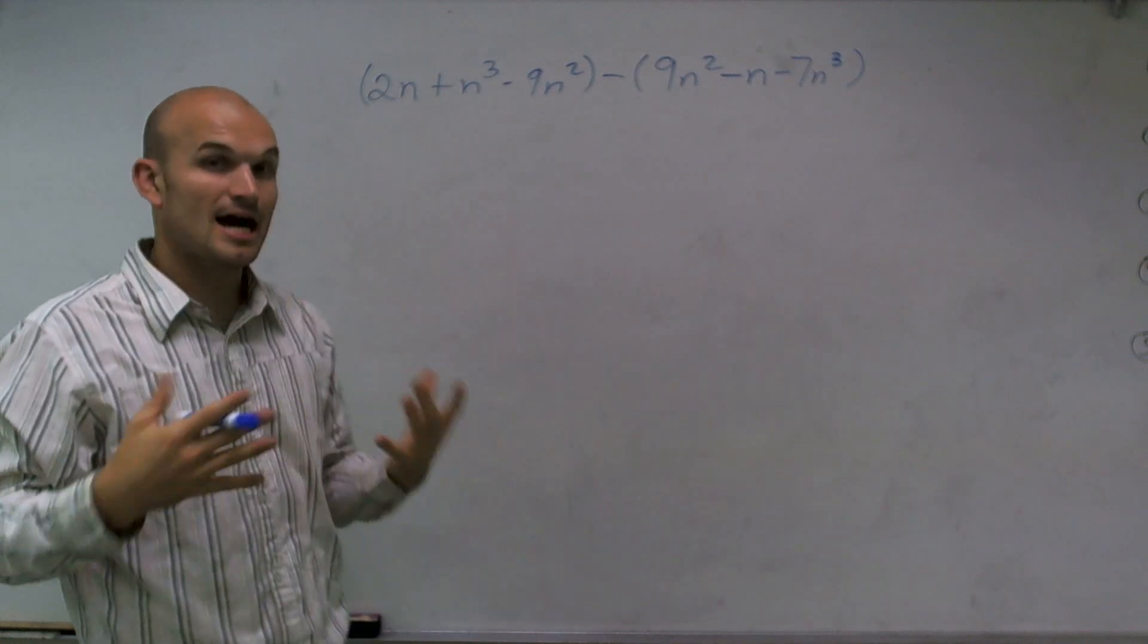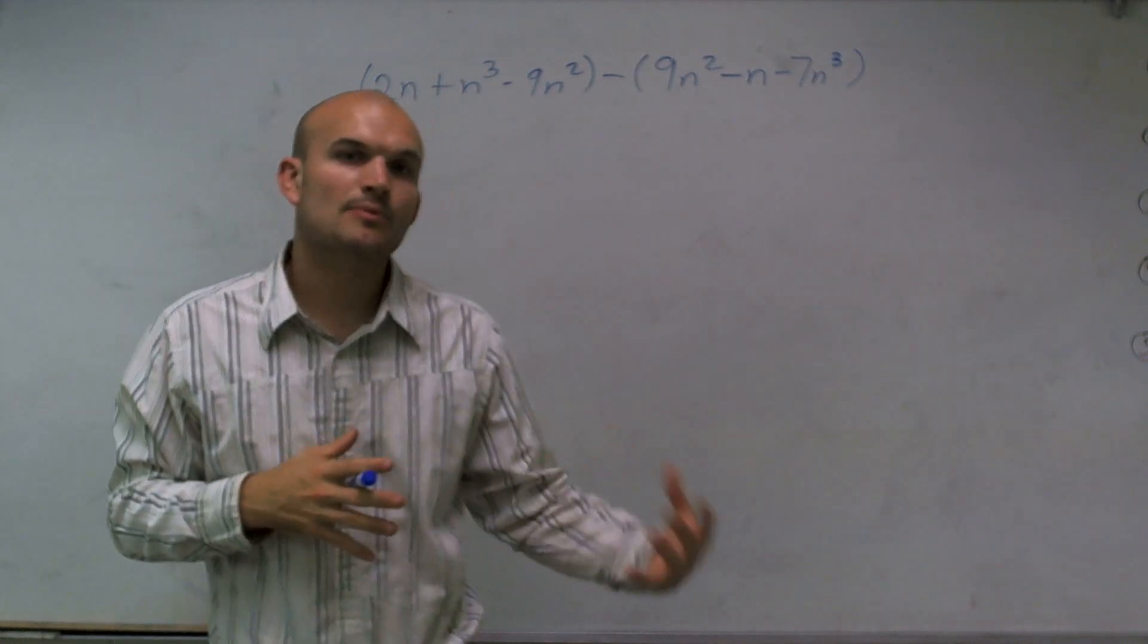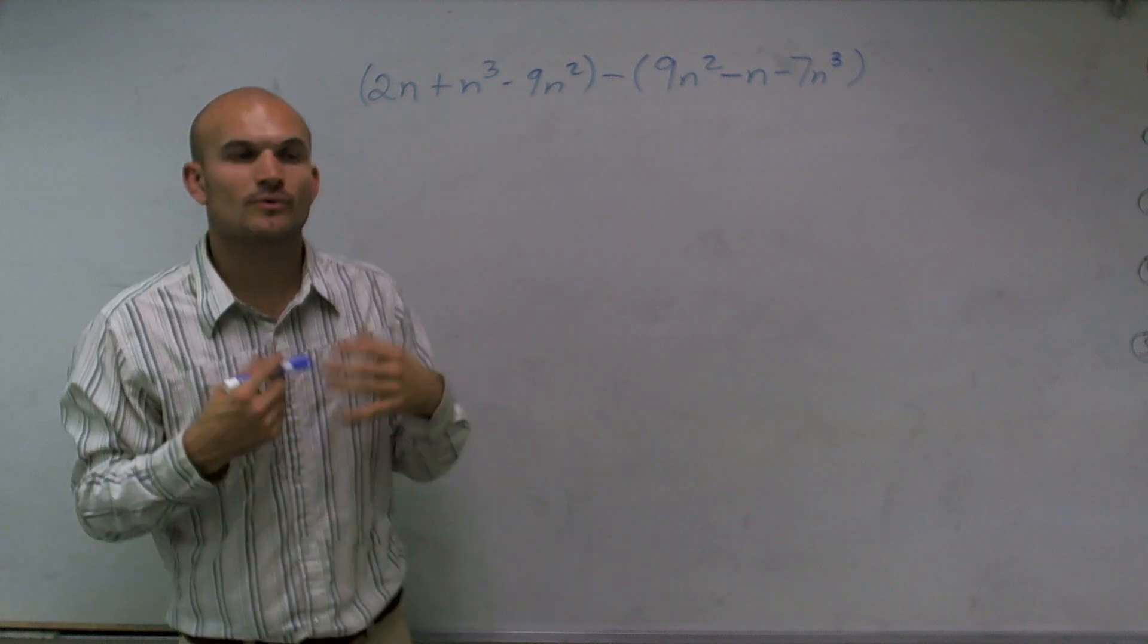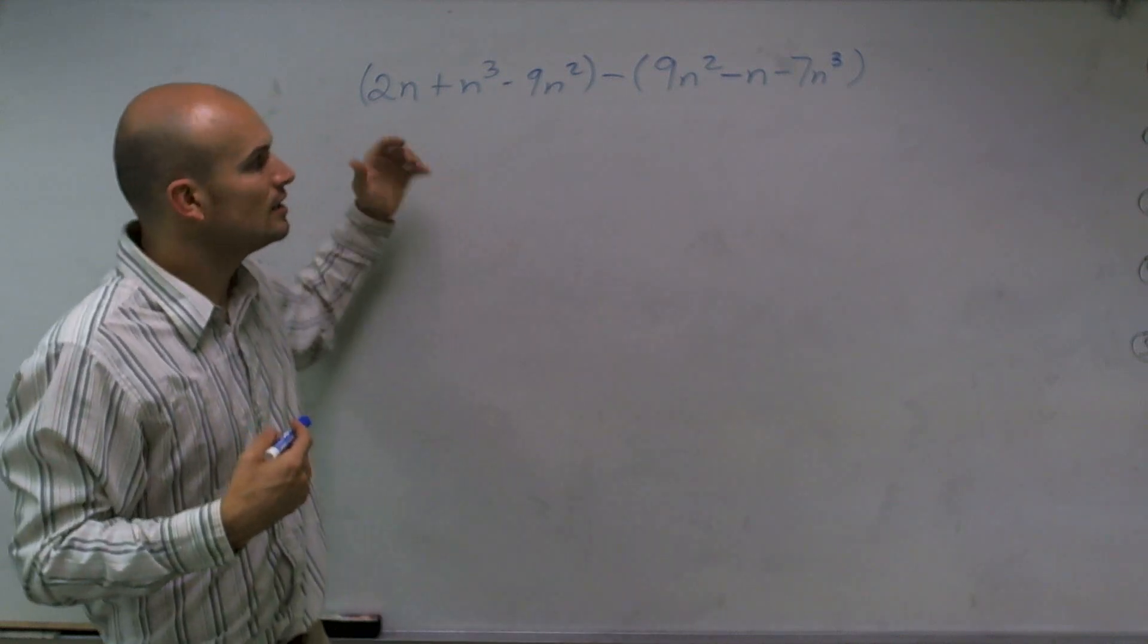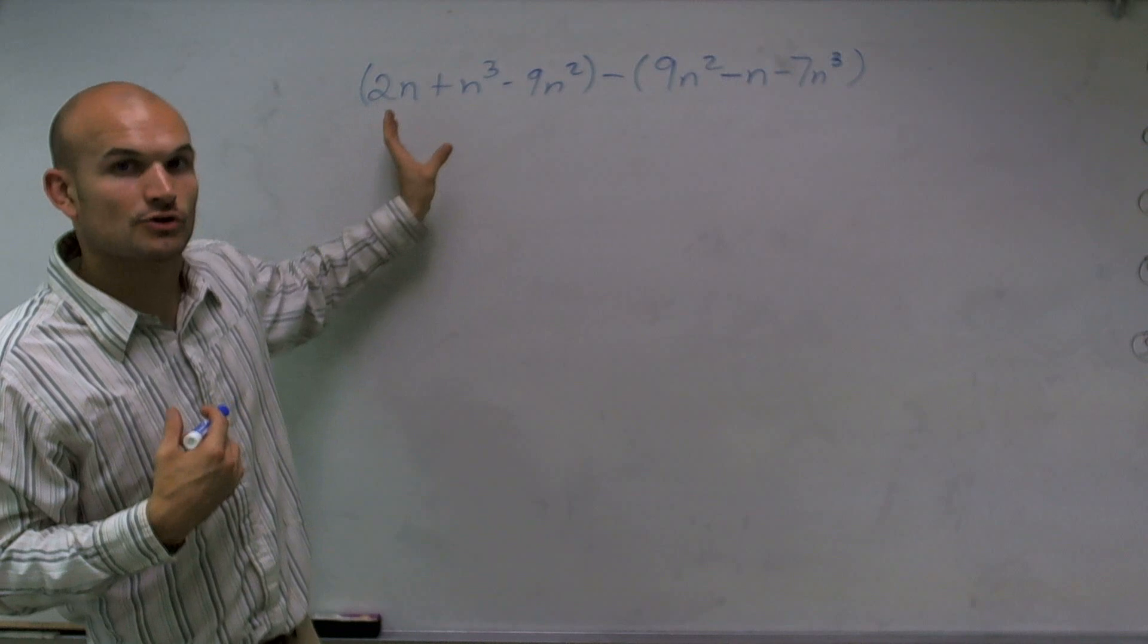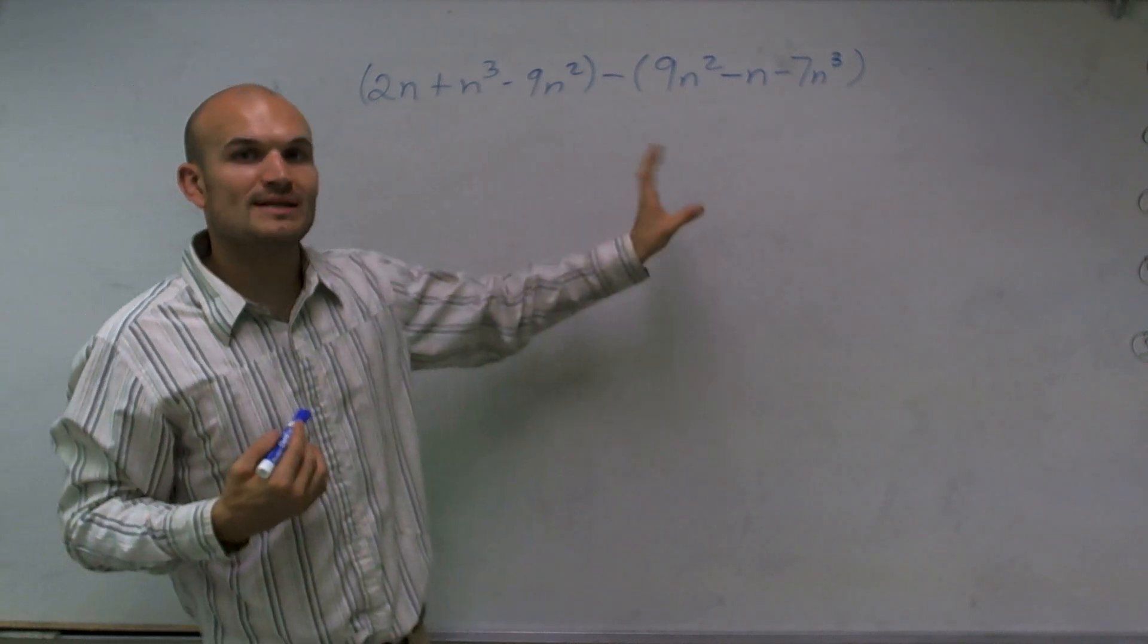Now, to help us do that, we came up with a standard form for us to write each polynomial. And what that means is we want to write it with our highest exponent, which we call our degree of our polynomial, and then all the way down in descending order.